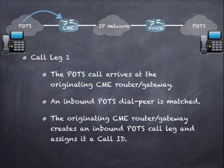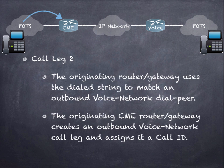Call leg one: the POTS call arrives at the originating CME router and an inbound POTS dial peer is matched. The originating CME router gateway creates an inbound POTS call leg and assigns it a call ID. Call leg two: the originating router uses the dialed string to match an outbound dial peer, creates an outbound call leg, and assigns it a call ID.